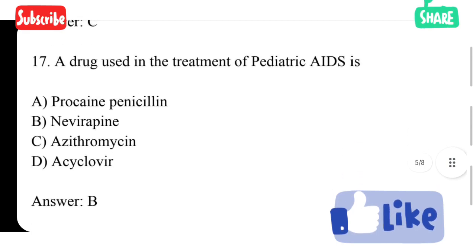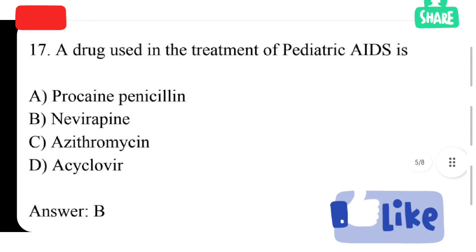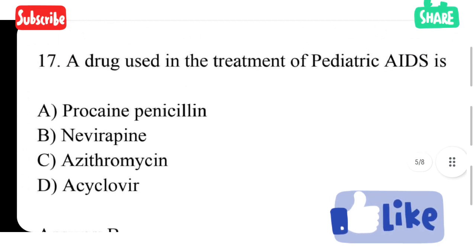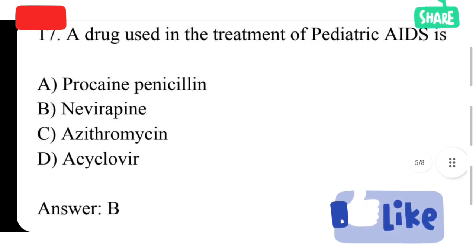A drug used in the treatment of pediatric AIDS is option A procaine penicillin, option B nevirapine, option C erythromycin, option D acyclovir. Option B is correct answer. Nevirapine drug is used in pediatric AIDS conditions treatment.